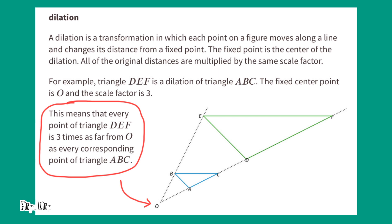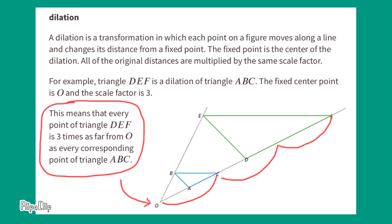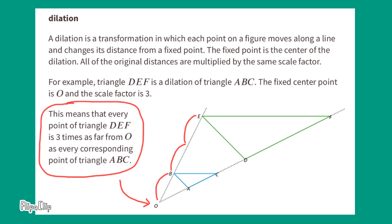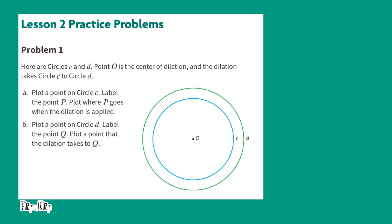This means that every point of triangle DEF is three times as far from zero as every corresponding point of triangle ABC. Point C is a certain distance away from zero; its corresponding point F would be three times that distance away from zero. Similarly, point B is a certain distance from zero, and its corresponding point E would be three times that distance away from zero.